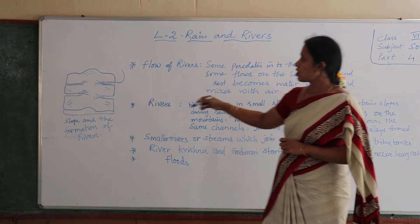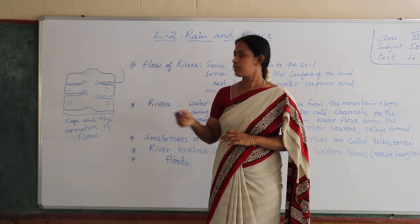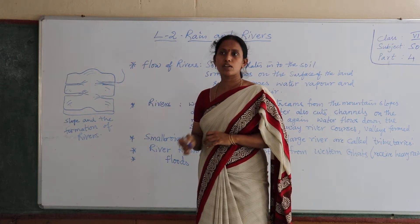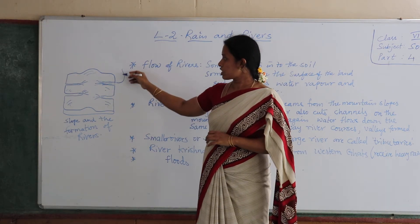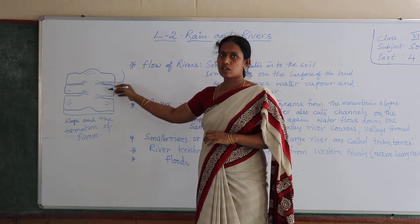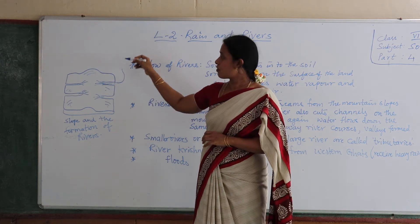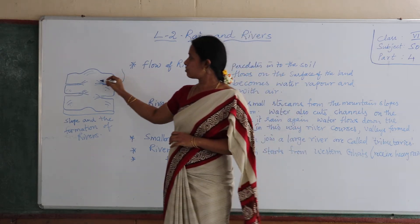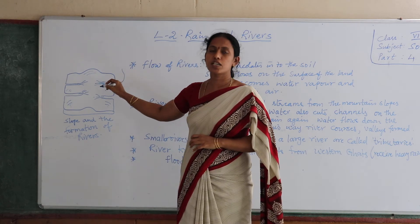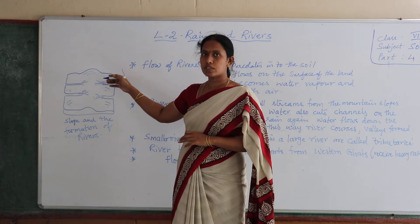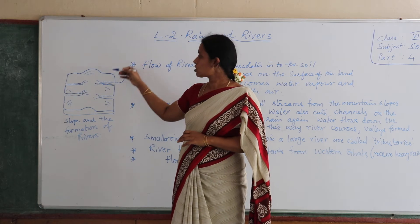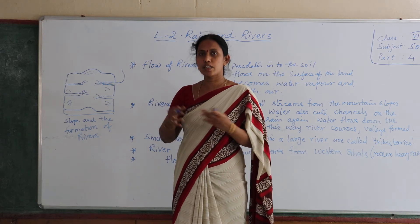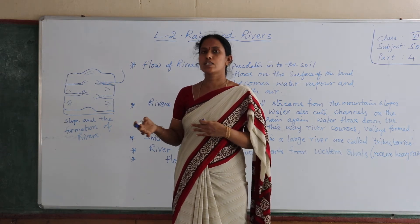In this way river courses form. When the water streams become bigger and broader, rivers and river valleys are formed. When the water comes from mountain slopes, the land gets cut into channels by the water. As these thin streams become bigger and broader, the rivers and river valleys are formed.